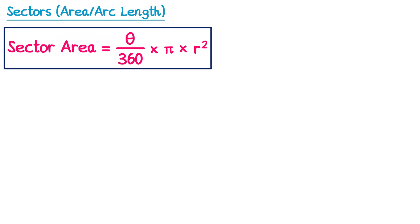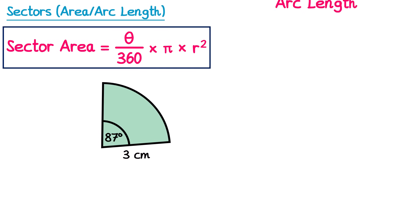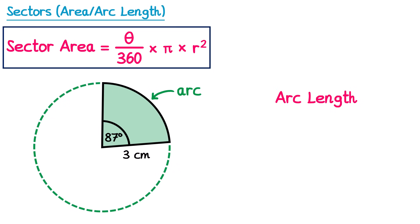Now we also need to be able to calculate the length of the arc of a sector, which we call the arc length. Remember the arc is this curved line here, so we're interested in how long that line is. You could think of an arc as being part of the circumference of the circle. If I draw on this green dotted line, this would be the whole circumference. I know how to calculate the whole circumference by doing pi multiplied by the diameter.